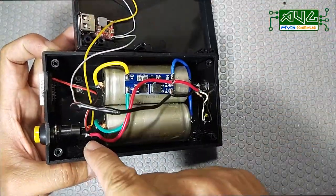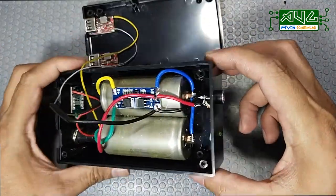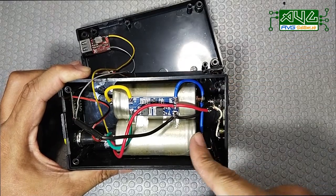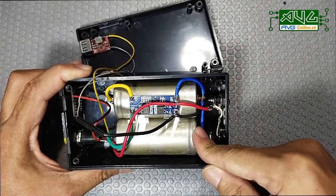For safety, pwede nyo lagyan ng separator itong area na ito. Ganon din dito sa kabila para may iwasan yung short circuit once na gumalaw yung battery in case na nabagsak.